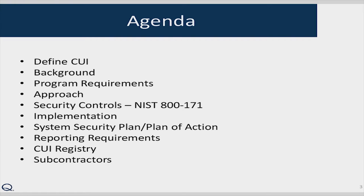Here's our agenda for today. We'll define what controlled unclassified information is, spend time on the background and program requirements. We'll go through Quantarian's approach to meeting the requirements. A major component was meeting the controls in NIST 800-171, so we'll discuss a couple of those and talk about implementation. Key components we needed to develop were a system security plan and a plan of action. We'll also cover recording requirements, the CUI registry, and subcontractors.